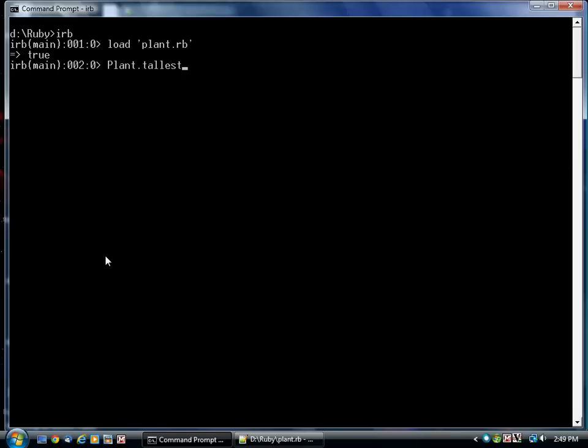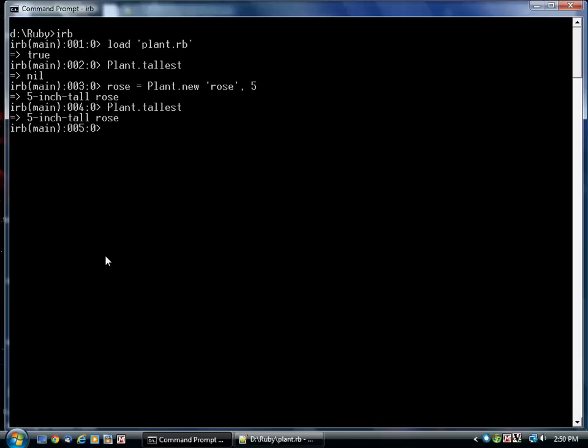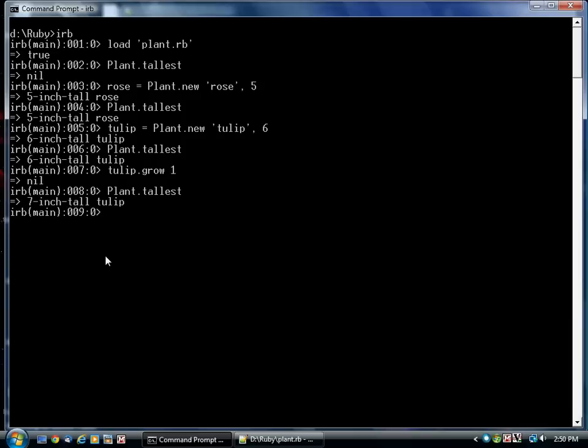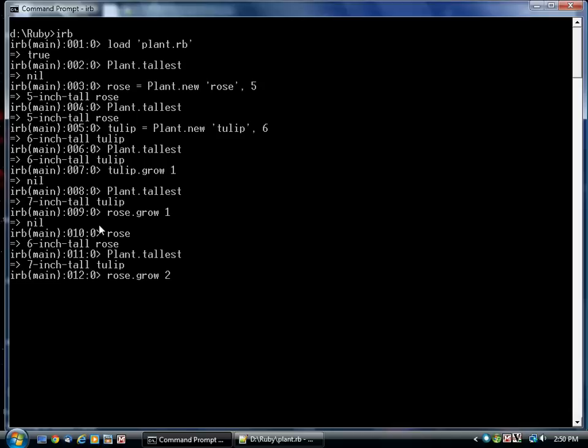Now I can immediately call plant.tallest without any plant instances existing. And of course I get nil. We don't have any tallest yet. But as soon as we create a five inch tall rose, that's now the tallest plant. If I create a six inch tall tulip, that's now the tallest. And of course if it grows, we're just getting a reference back to the same tulip, which is now seven inches tall. The rose is now six inches tall, but the tallest is still the tulip. But if the rose grows another two inches, the tallest is now the rose.